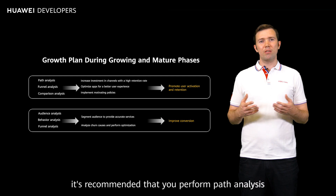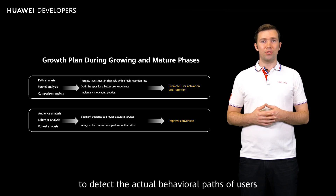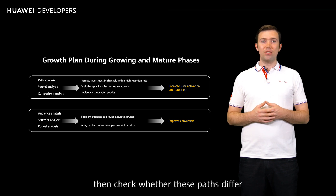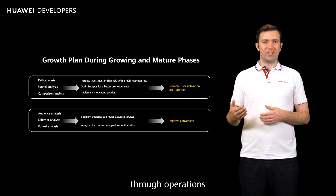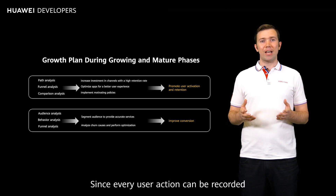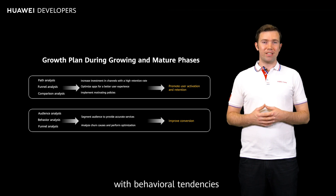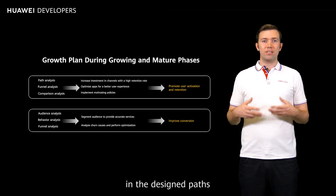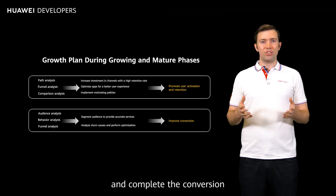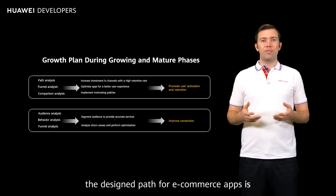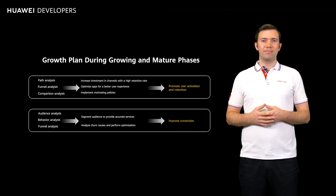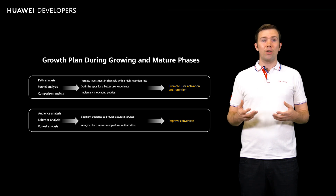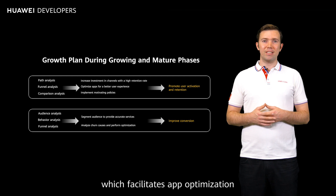For conversion, it's recommended that you perform path analysis to detect the actual behavior paths of users when they're using the app, then check whether these paths differ from the design paths. Since every user action can be recorded, you can familiarize yourself with behavioral tendencies and characteristics of users, obtain the click trends, and plan so that users behave accordingly in the design paths, reach the core modules of apps, and complete the conversion. For example, the design path for e-commerce apps is: browse, add to favorites, add to cart, submit the order, and make payment. Funnel analysis can also be performed to give you a good understanding of the conversion rate and churn rate of each phase, which facilitates app optimization.